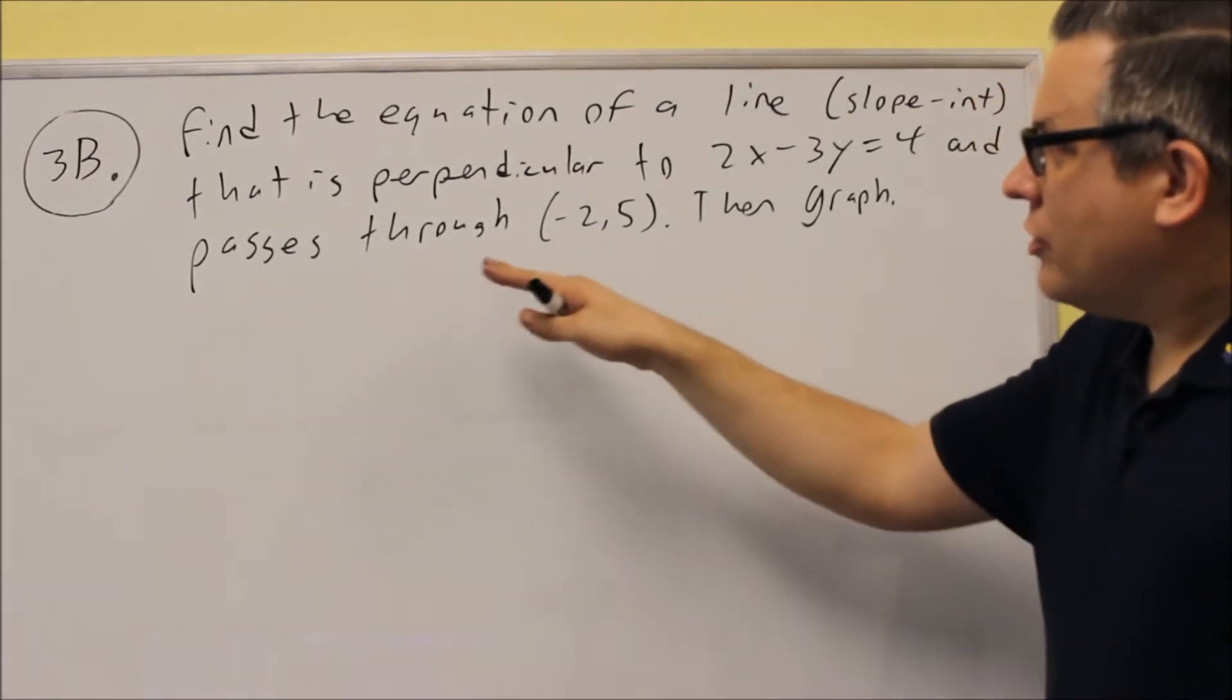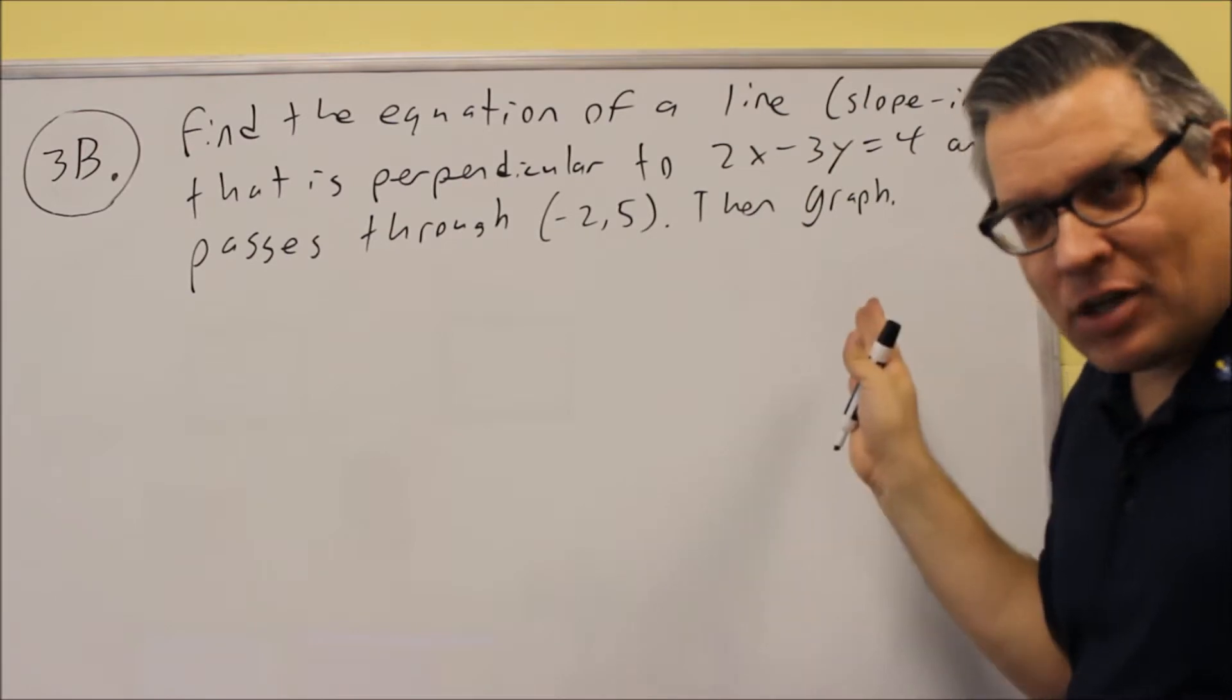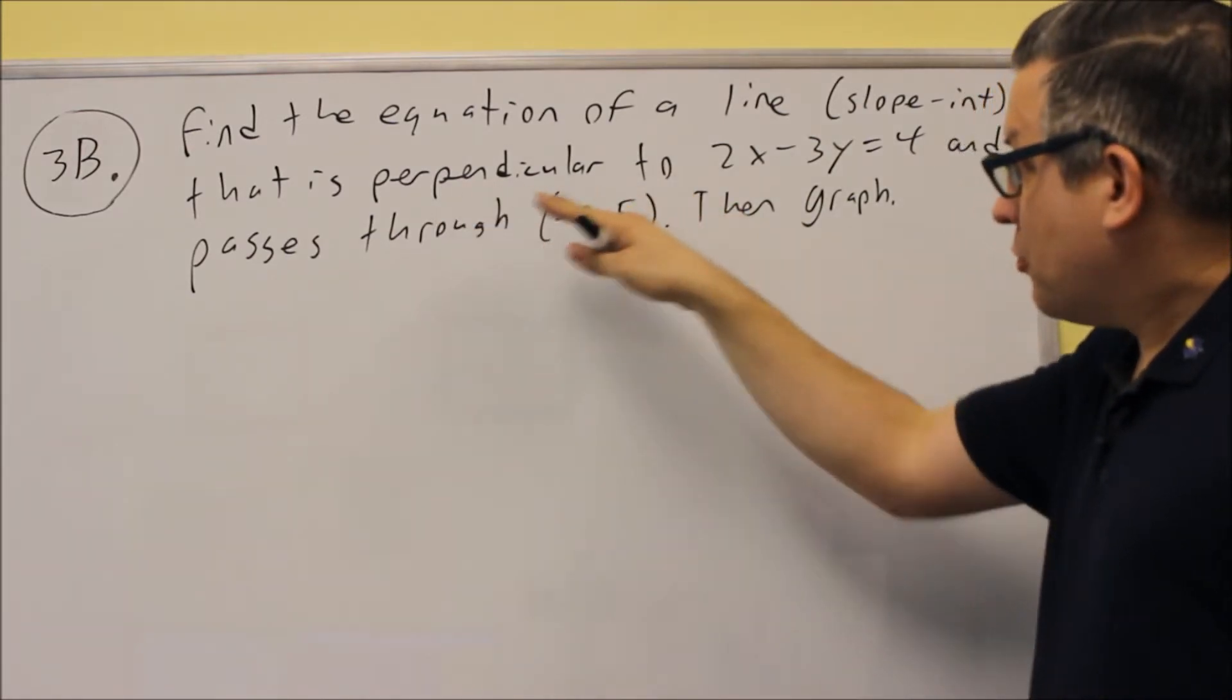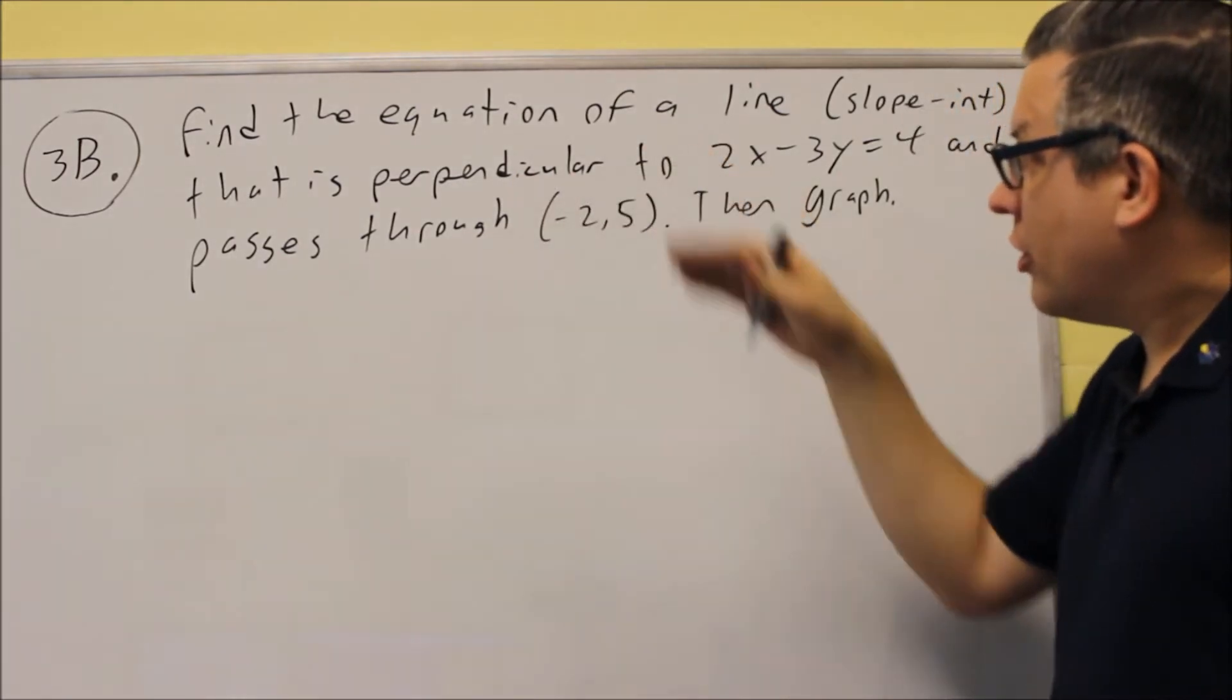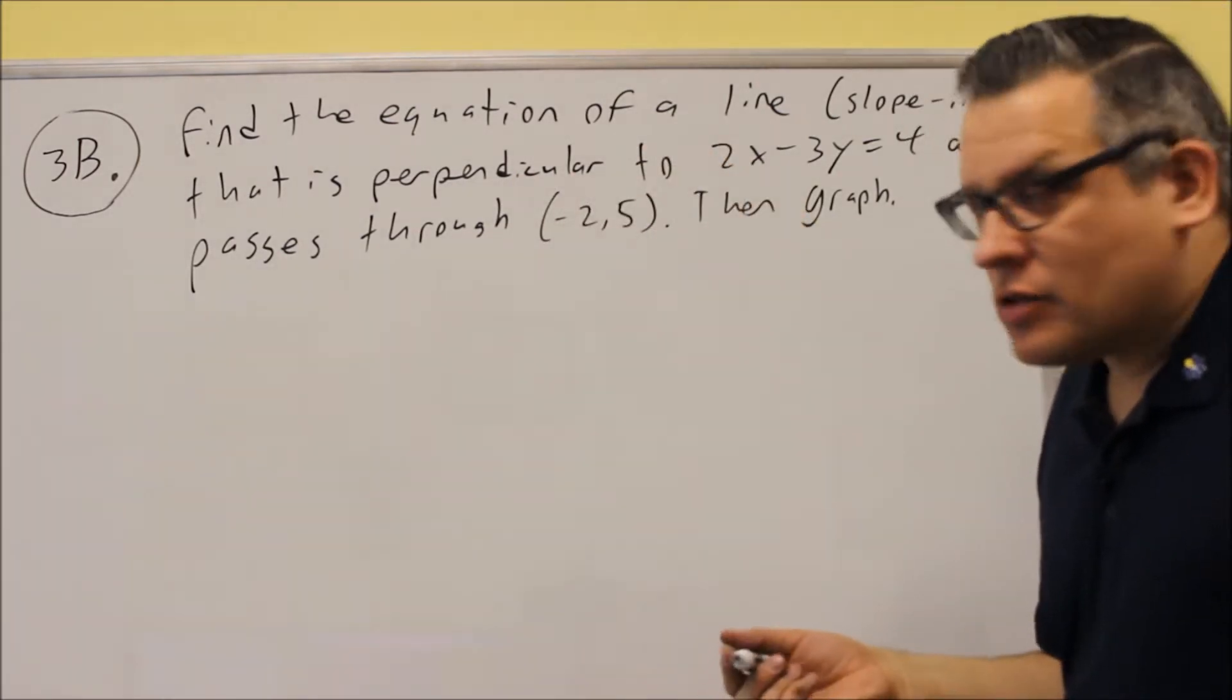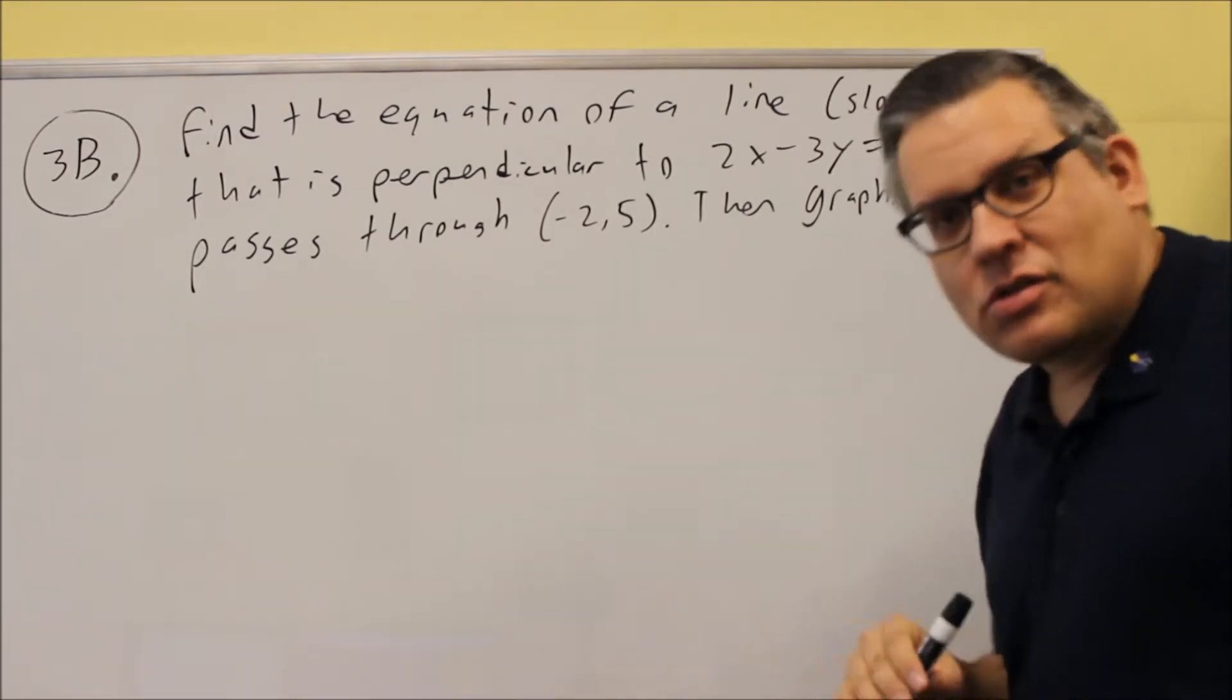For 3B, they want you to find the equation of a line. This looks a little bit different because now we're talking about perpendicular, so instead of giving two points, we're now working with parallel and perpendicular lines. You want to make sure you know how to do both of these on the test.